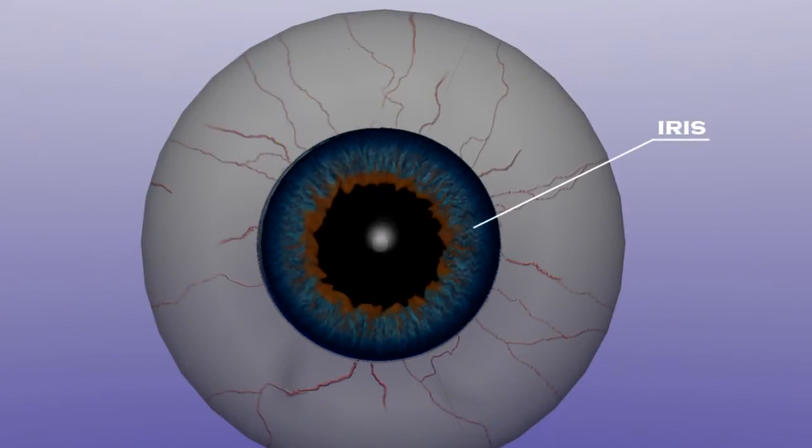The iris gives the eye its color. This color is genetically determined. It is made up of three layers of connective tissue and muscle fibers: endothelium, stroma and epithelium.